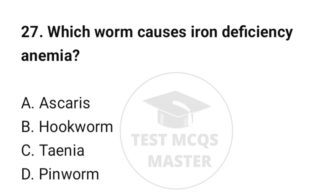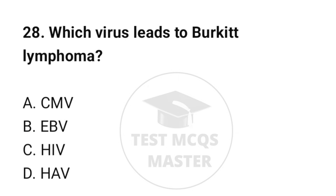Question number 27: Which worm causes iron deficiency anemia? The correct option is B: Hookworm. Question number 28: Which virus leads to Burkitt lymphoma? The correct option is B: EBV.